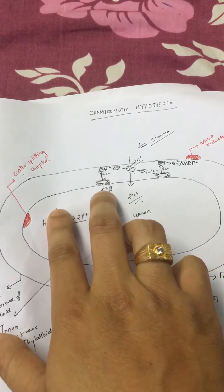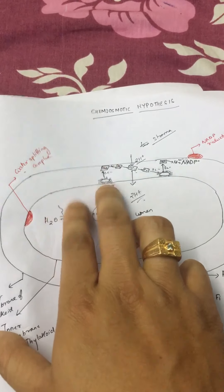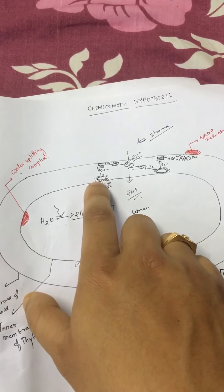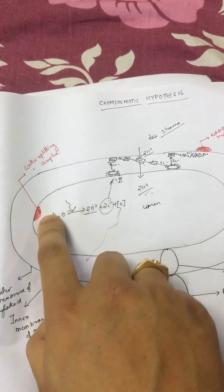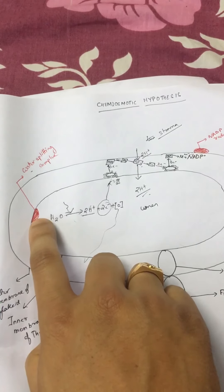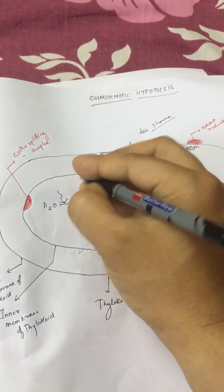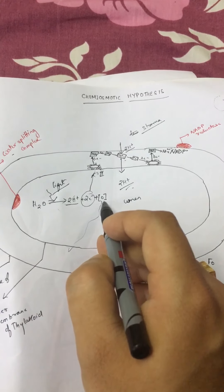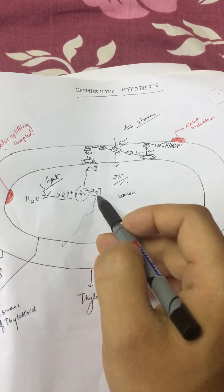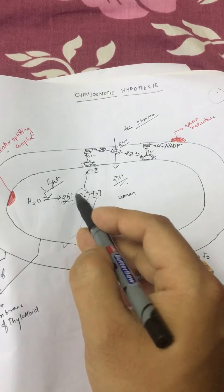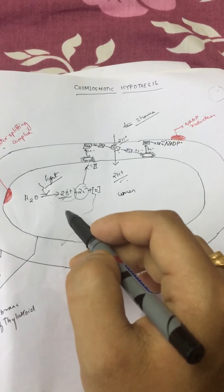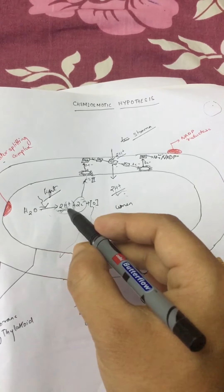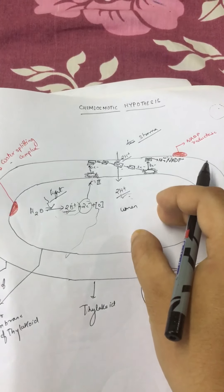When two electrons leave chlorophyll a of PS2, they must be compensated. For this, a water molecule gets broken down. The water splitting complex, present in the inner membrane of the thylakoid, facilitates this breakdown. Since water breaks down in the presence of light, this is called photolysis of water. Water breaks down into two protons, two electrons, and one oxygen molecule. The two electrons compensate PS2, the oxygen is released, and the two protons are now present in the lumen of the thylakoid.